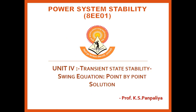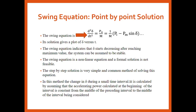The swing equation is given as: d²δ/dt² = Pa/M, which equals Pi minus Pm times sin(δ), where Pi is the input power and Pm·sin(δ) is the electrical power. So the accelerating power Pa equals the electrical power minus the mechanical power.